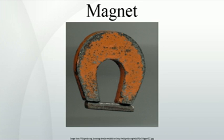As a practical matter, to tell which pole of a magnet is north and which is south, it is not necessary to use the Earth's magnetic field at all. For example, one method would be to compare it to an electromagnet, whose poles can be identified by the right-hand rule. The magnetic field lines of a magnet are considered by convention to emerge from the magnet's north pole and re-enter at the south pole.